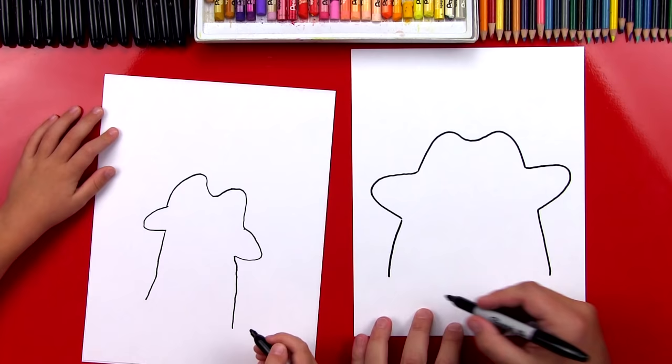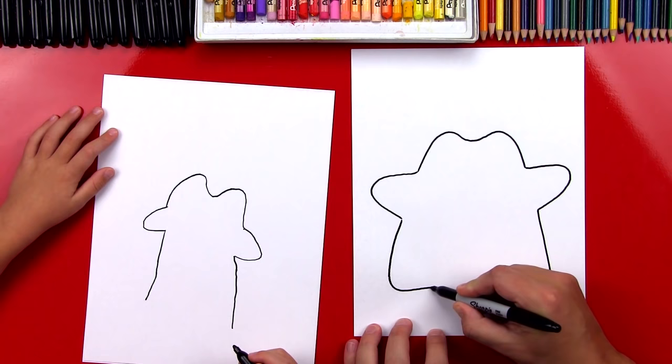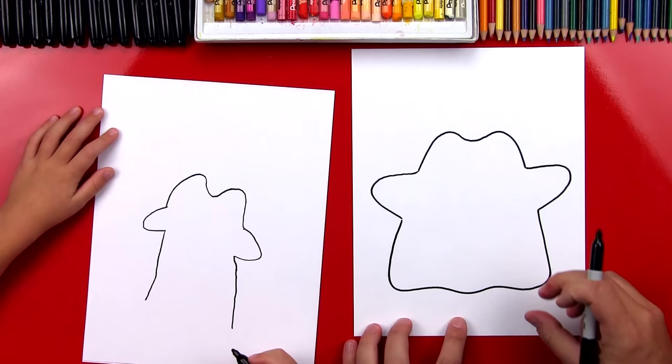Now let's draw the bottom, and it's a wavy line. Watch. We'll curve here on the side. A little bump in the middle. And then curve over here in the corner. Looks like he has two feet.